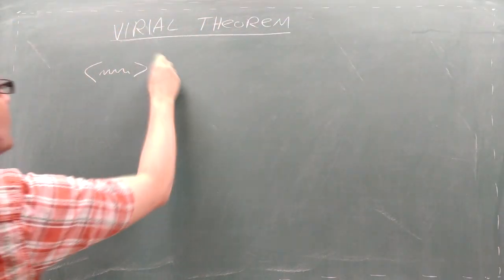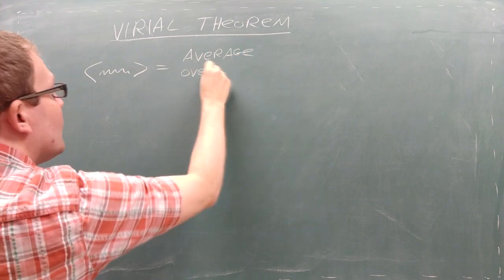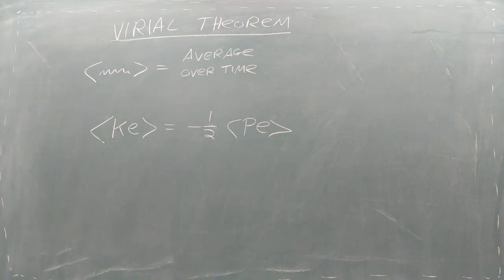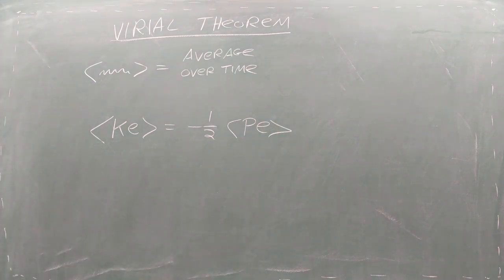For a gravitational system, the Virial Theorem says that over time the average value of the total kinetic energy is always negative one-half times the average value of the total potential energy.